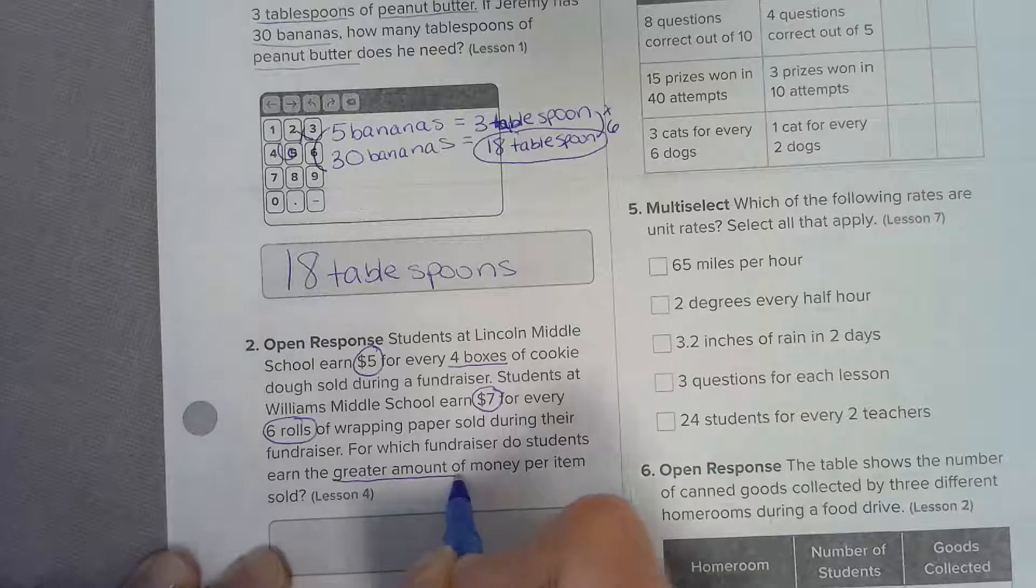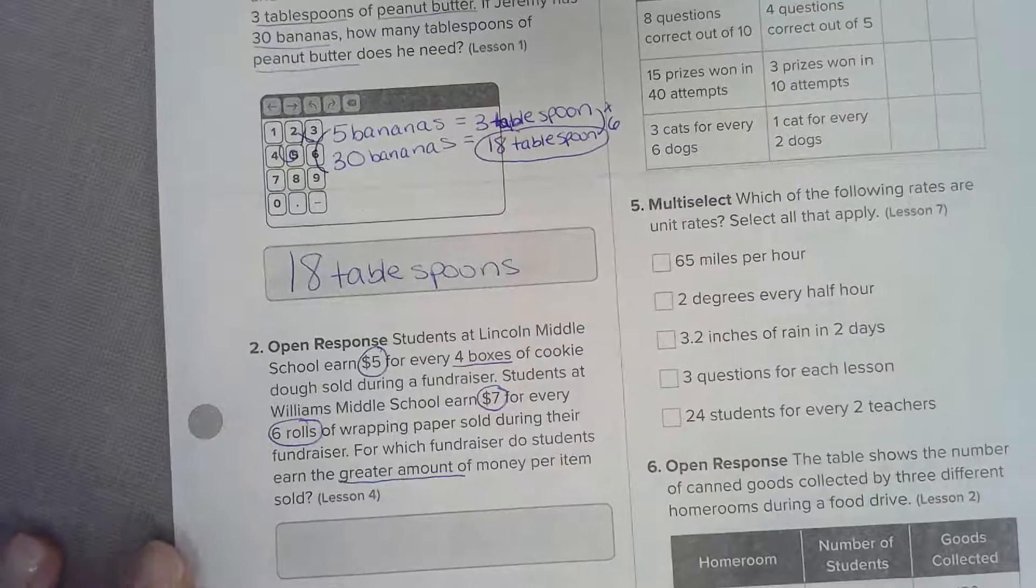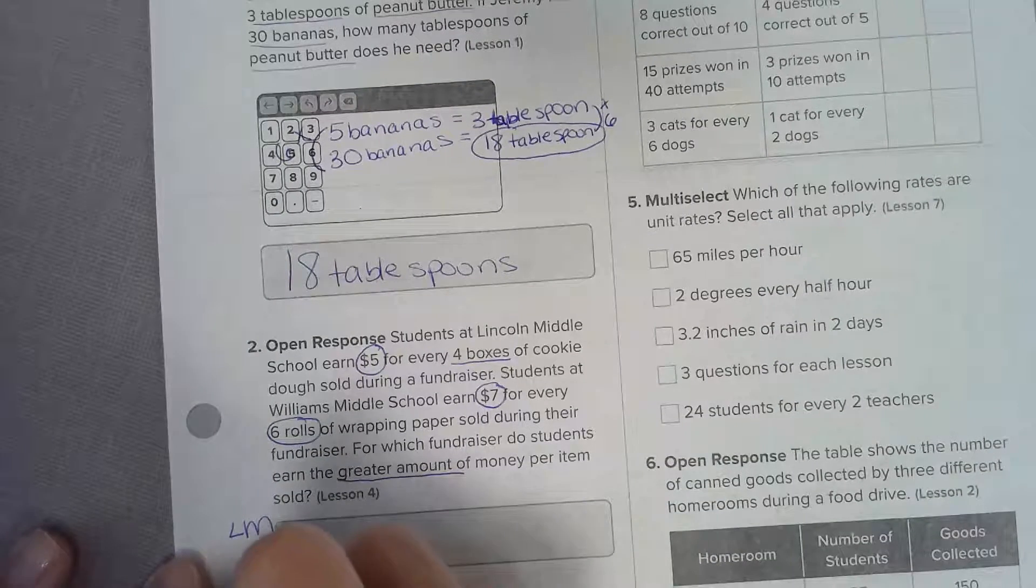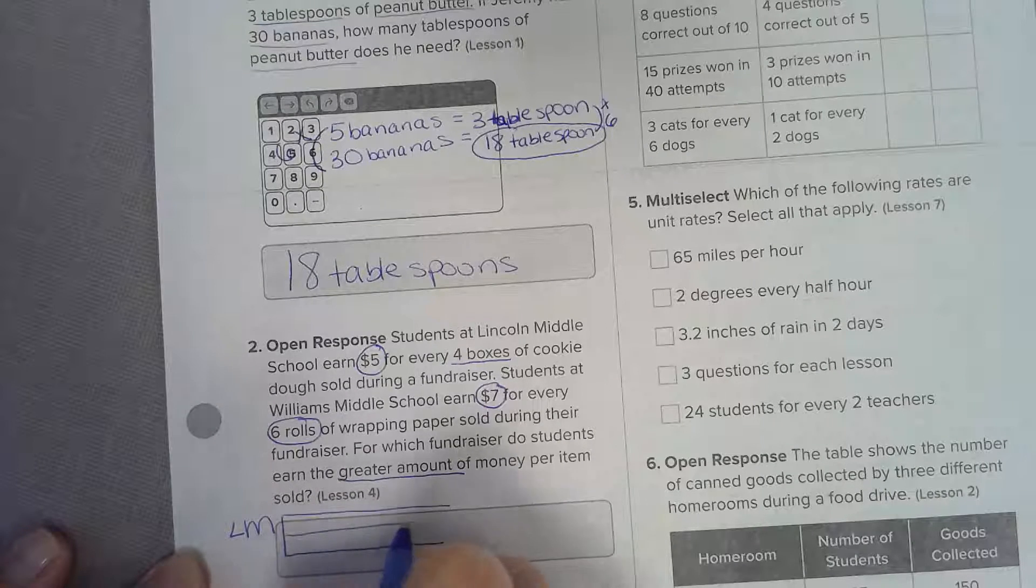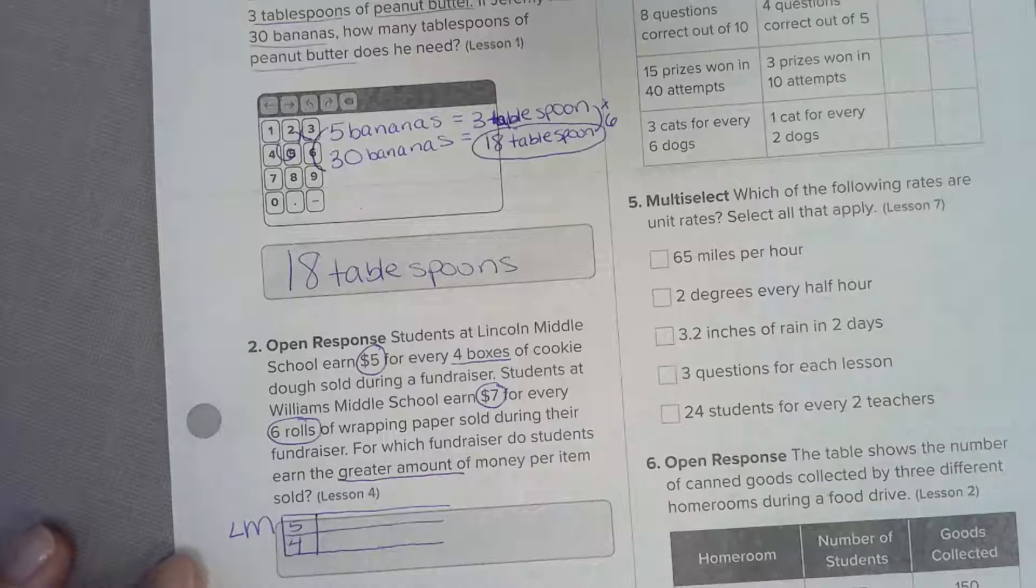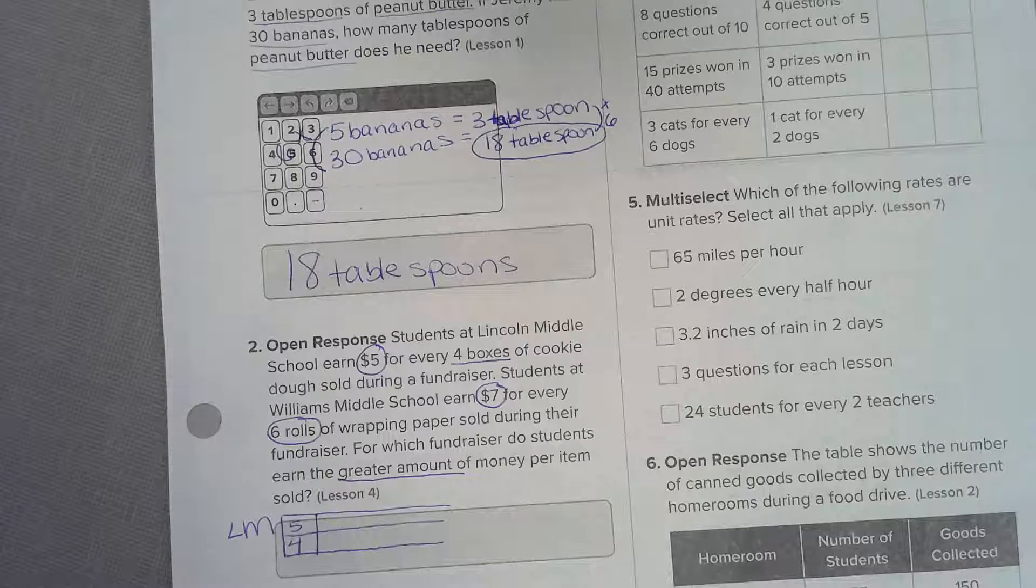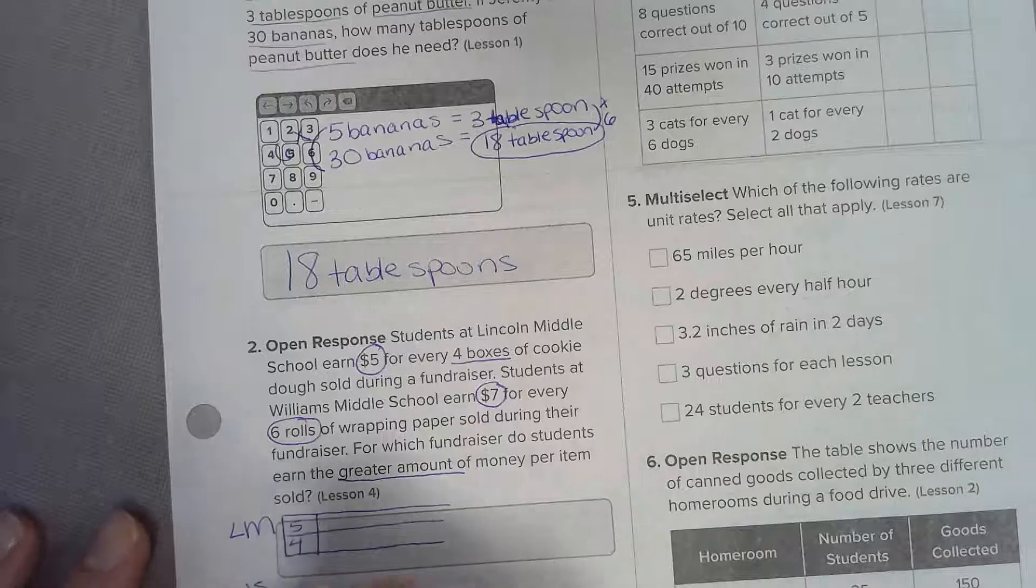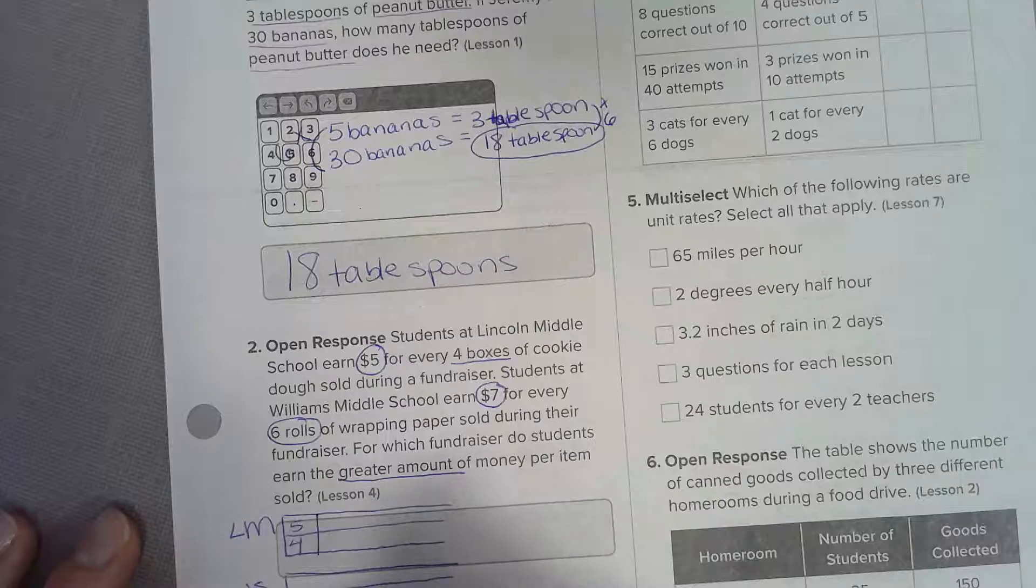For this one we're gonna have to make a table and then compare the tables. Let's do Lincoln Middle School - make sure you make your rectangle big enough. Put our five to four in there. This one is William Middle School with a ratio of seven to six.